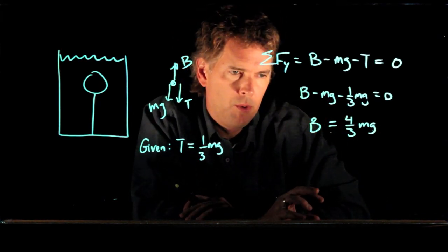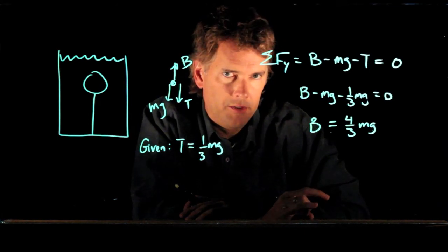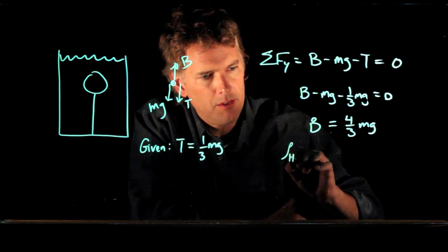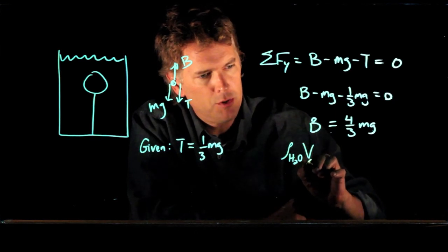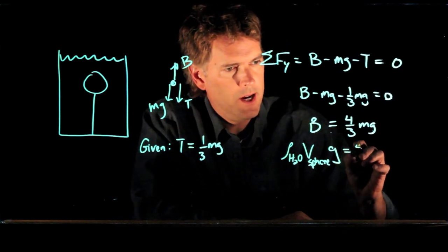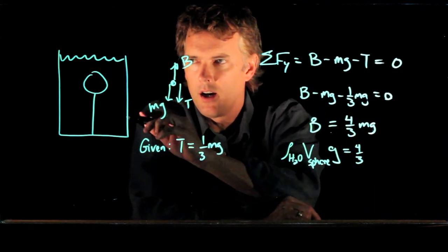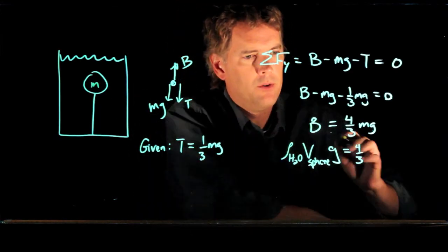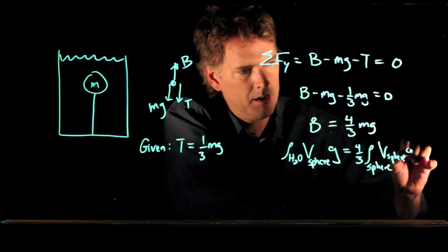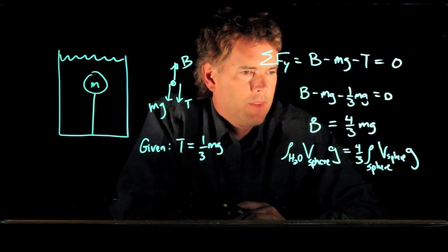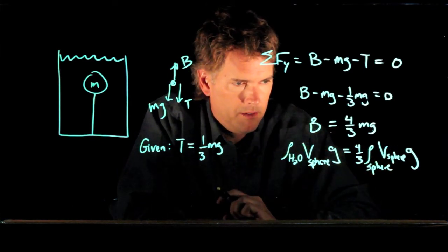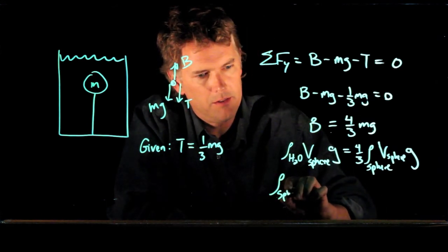We also know that the buoyant force is the weight of the displaced fluid. This thing is a sphere — it displaced water. So the buoyant force we can write as the density of water times the volume of the sphere times gravity. On the right side, m is the mass of the sphere, which equals the density of the sphere times its volume, times gravity. Now a bunch of stuff cancels out: V-sphere is on both sides, and G is on both sides. We can solve for the density of the material in the sphere.